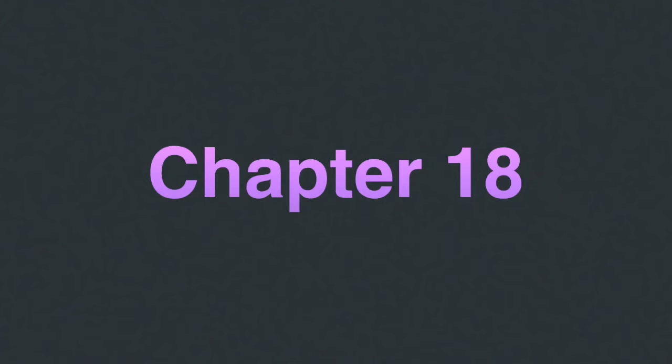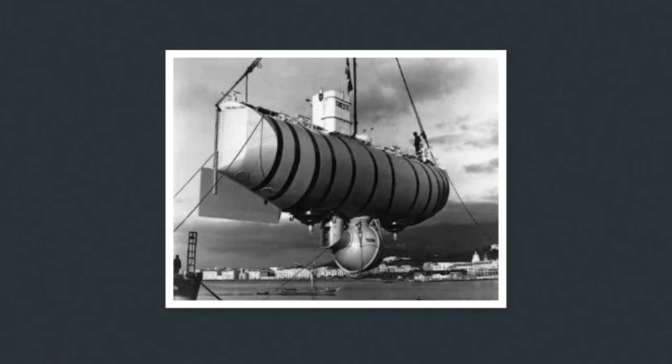Chapter 18: Some of the first deep ocean vessels were made around 1930 from 1.5 inch thick cast iron, which could hold 2 men and could go down around 600 feet.